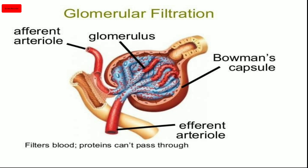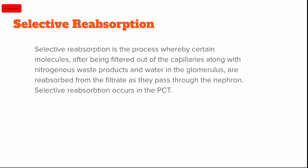In the diagram we can see Bowman's capsule and within it the network of capillaries, also known as the glomerulus. Blood enters from the afferent arteriole. From the afferent arteriole, the glomerular filtration process occurs — blood filtration takes place but proteins do not pass through.